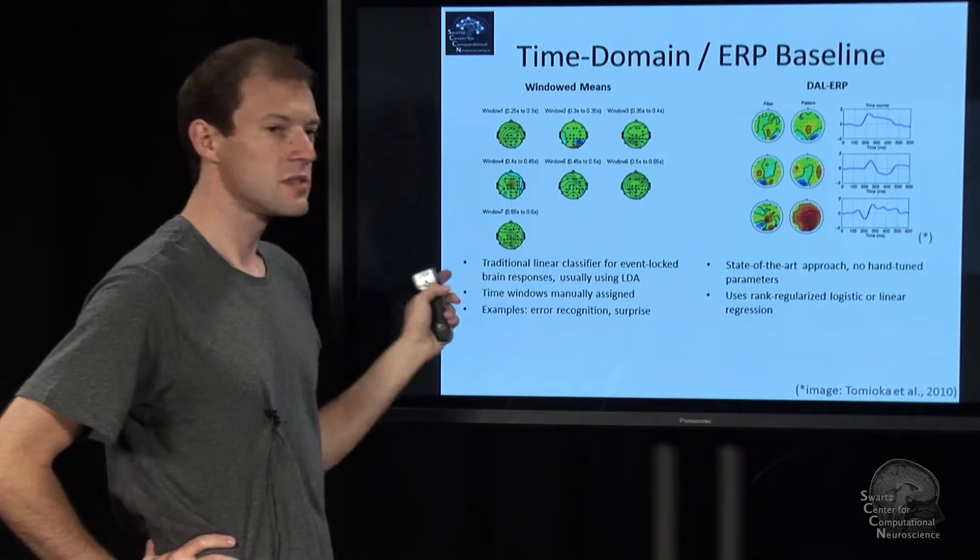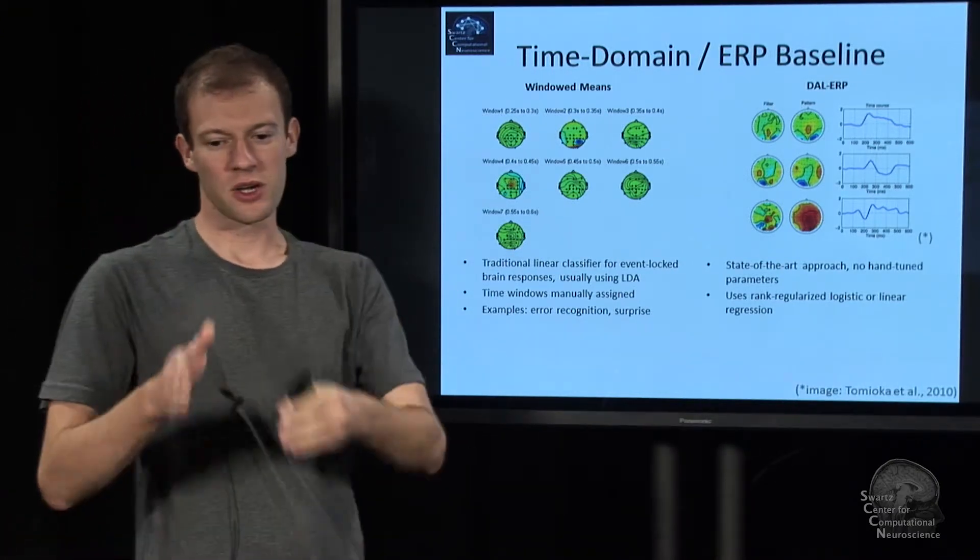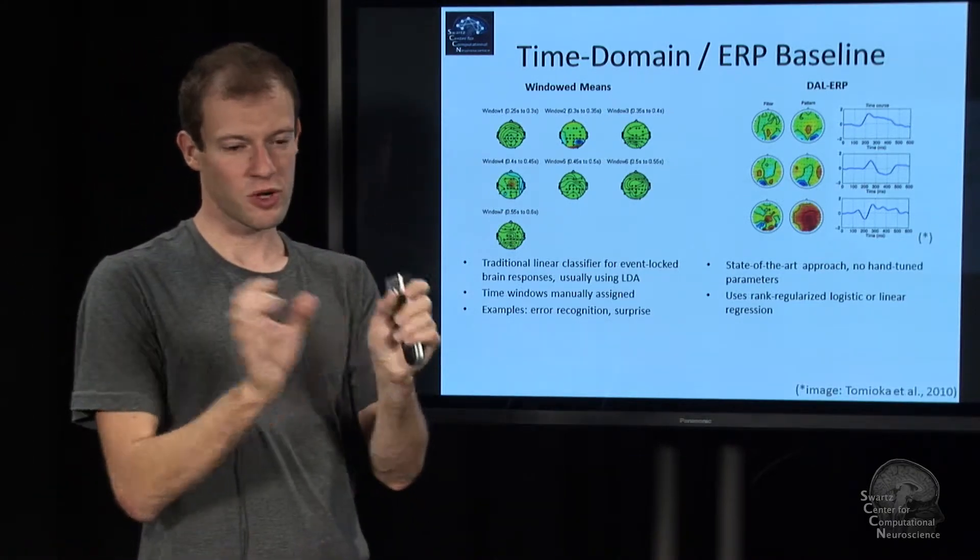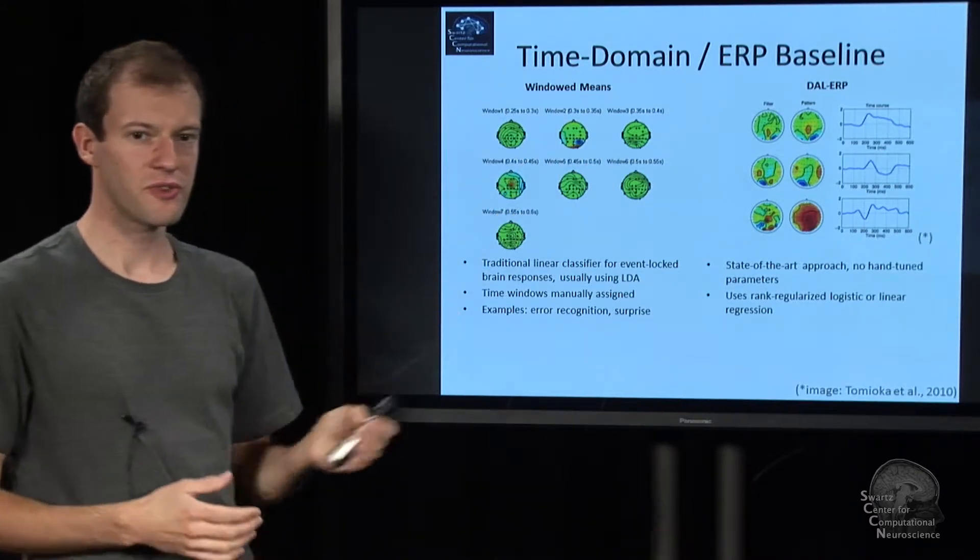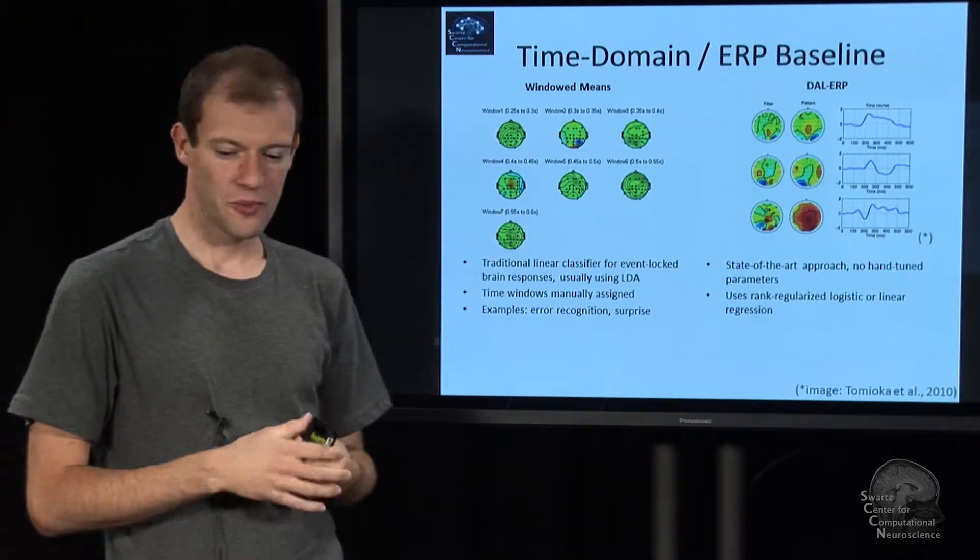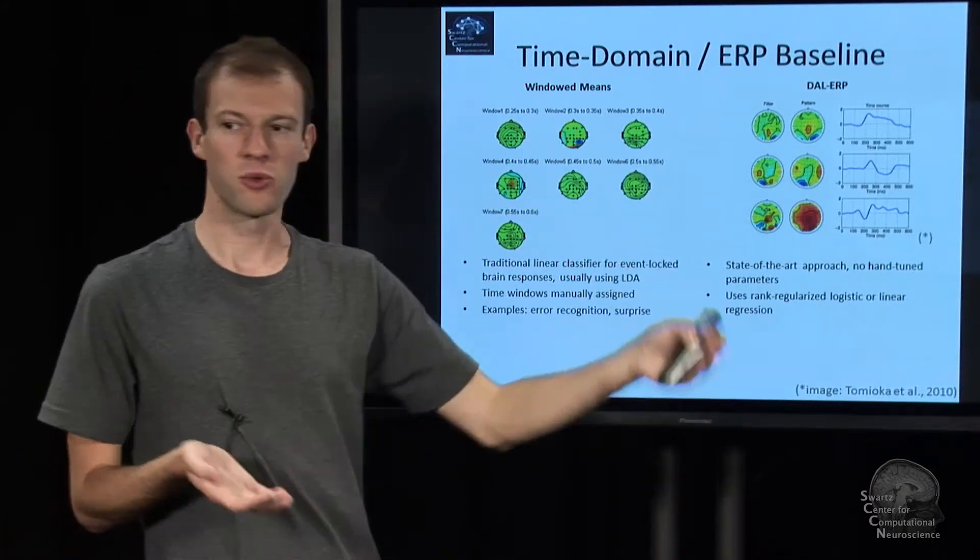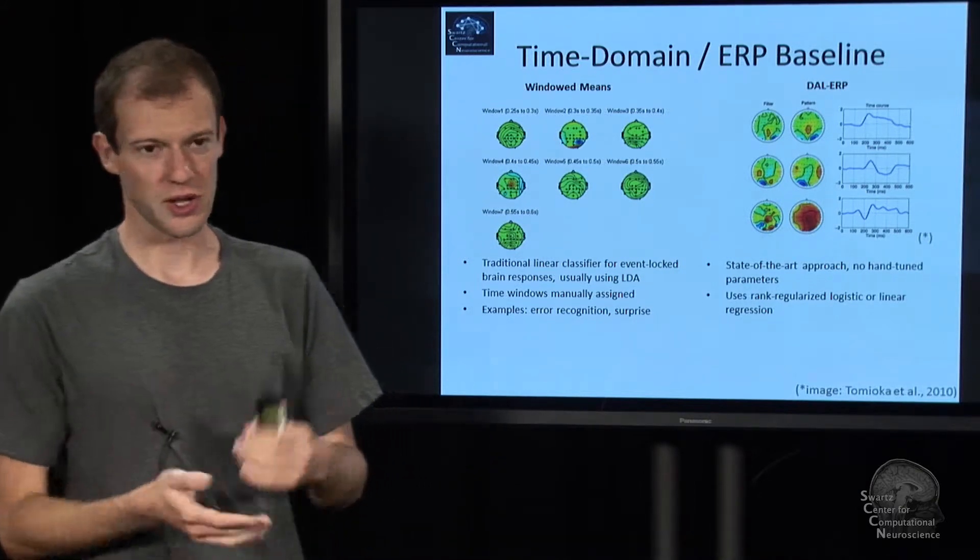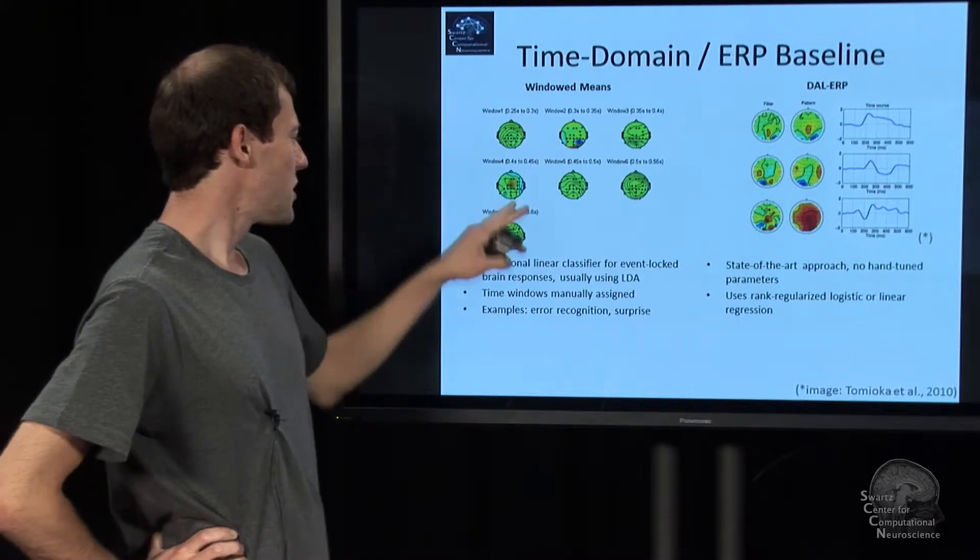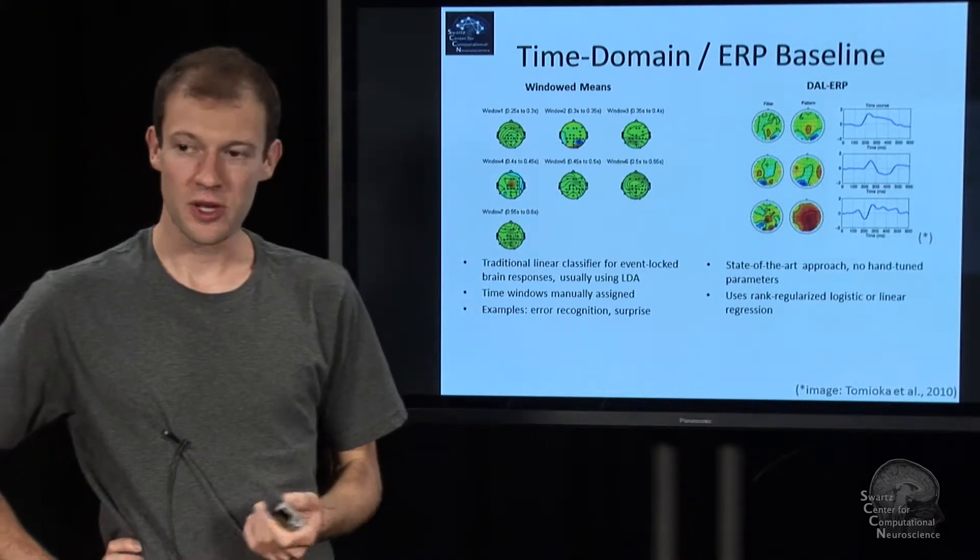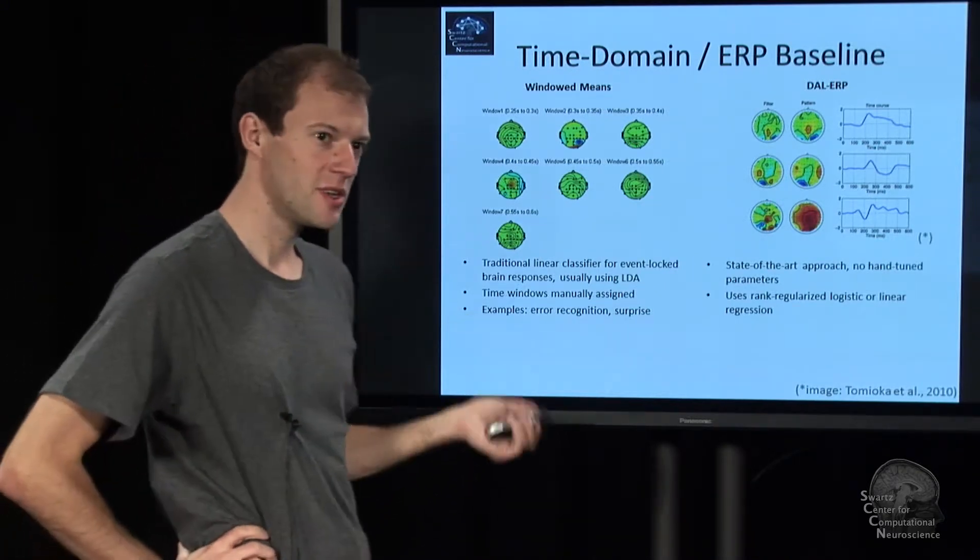One is this windowed means approach which essentially amounts to, for a given epoch, extracting a bunch of segments in that epoch, averaging the signal in these segments for each channel, and utilizing these values as features that are fed to a classifier which tries to map that onto an output value. That's a windowed means method and this is basically one of the most frequently used methods for brain-computer interfacing across the literature.